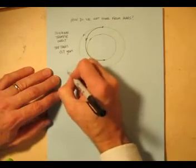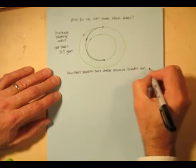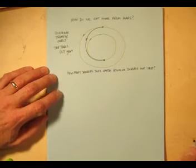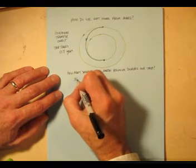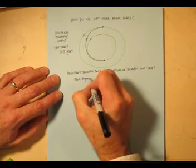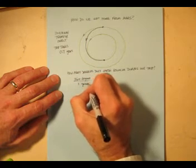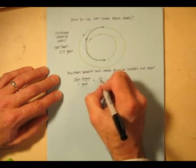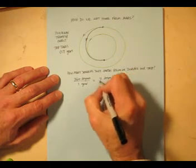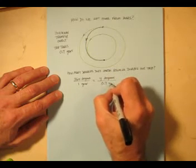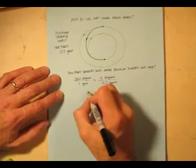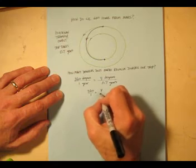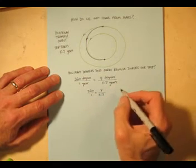So our question could be, how many degrees does Earth revolve during our trip? Well, we know that Earth revolves 360 degrees in one year, and it's going to revolve some number we don't know yet, say y degrees, in 0.7 years. So it's a proportion again: 360 divided by 1 equals y over 0.7. You can do that thing you do.